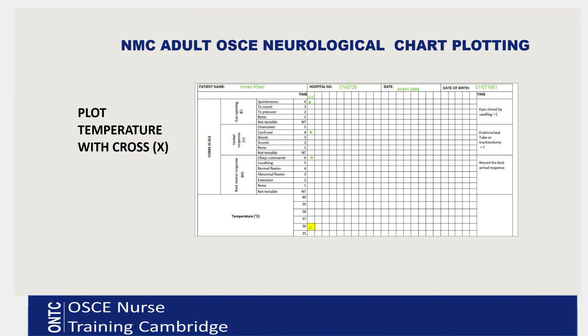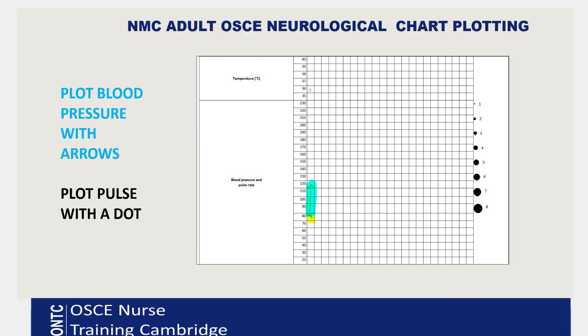Next we plot temperature. Temperature is plotted with a cross sign. As you can see on the screen, I've highlighted it — that's how you plot the patient's temperature in the correct box.